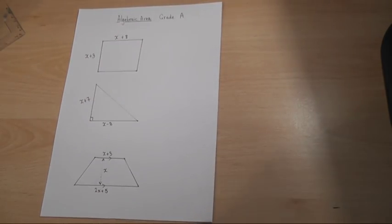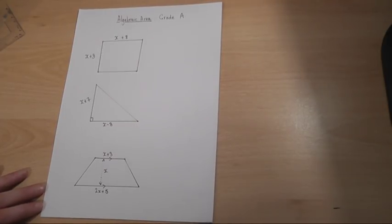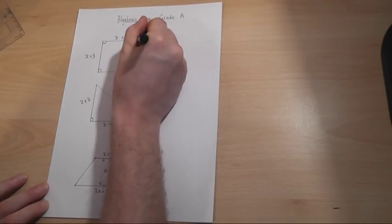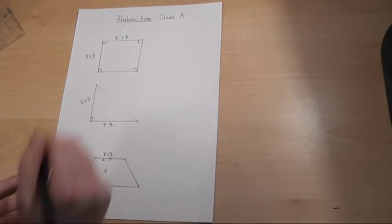The Grade A questions at GCSE can often now involve algebraic area, which involves using your normal area techniques to find an expression for the area of the given shape. The first example is a rectangle.